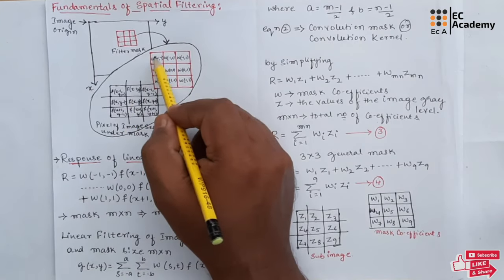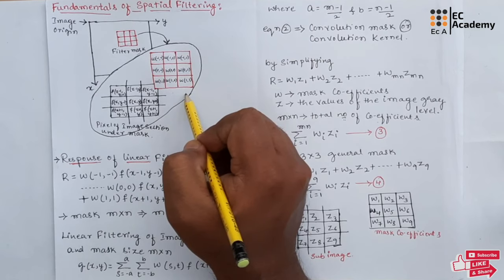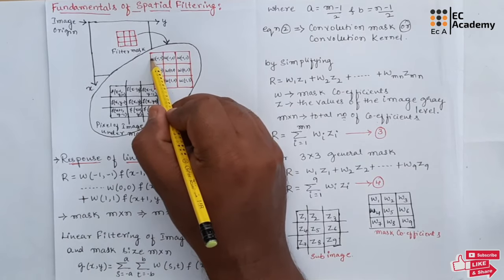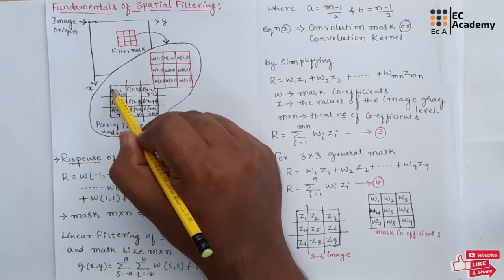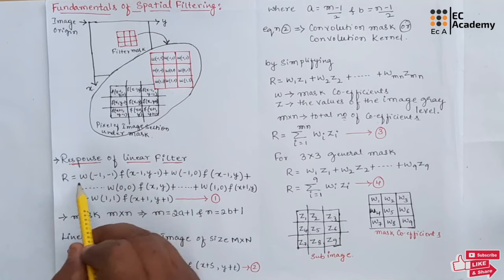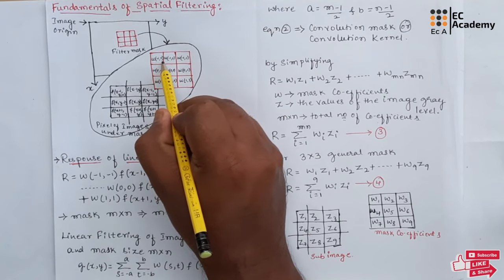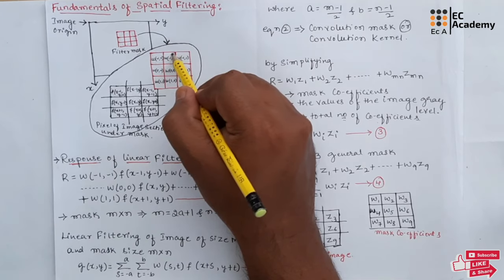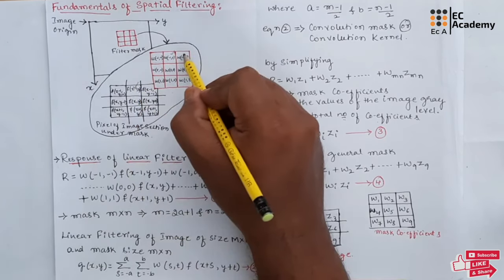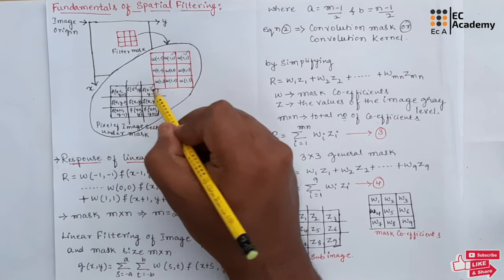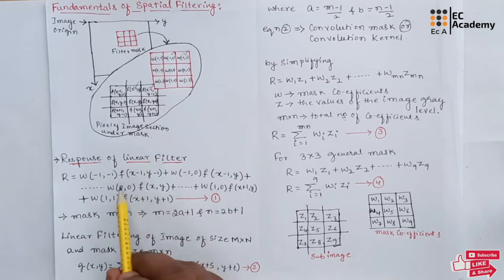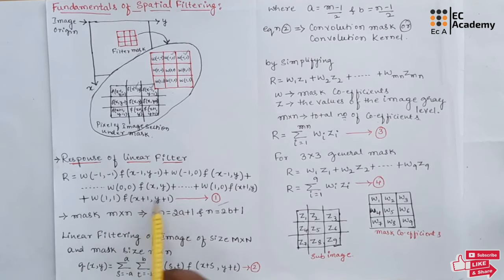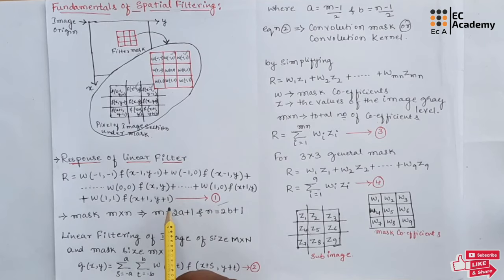For example, if we take a 3×3 mask as shown in this figure, the result or response of the linear filter is given as r equals the product of the filter coefficient and the corresponding image pixels. So we get r = w(−1,−1) × f(x−1, y−1), and similarly each filter coefficient is multiplied with its corresponding image pixel value. The multiplication is performed for all positions and the sum of each value is taken. This is written as equation number 1, which is the sum of products of the mask coefficients with the image pixel values.